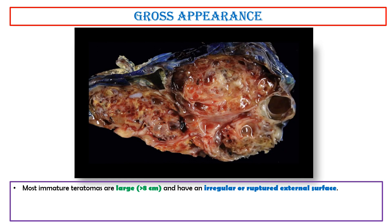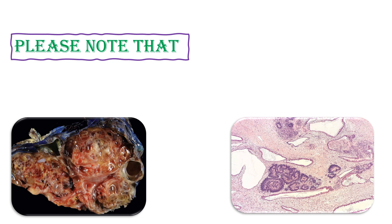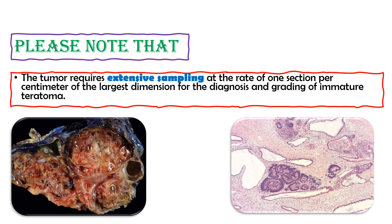Gross appearance. Most immature teratomas are large, more than 8 cm, and have an irregular or ruptured external surface. This photo shows a solid and cystic tumor with a heterogeneous cut surface, including cartilaginous and yellow fatty nodules, as well as prominent but otherwise indistinct solid areas. The tumor requires extensive sampling at the rate of one section per centimeter of the largest dimension for diagnosis and grading of immature teratoma.